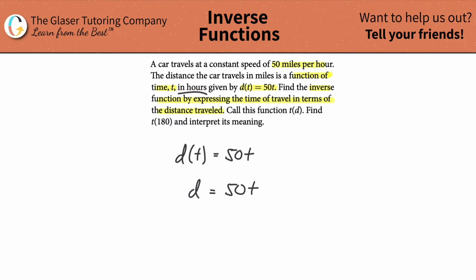It says T represents hours. Okay, so if one hour, if you're traveling 50 miles an hour, after one hour of travel how many miles you're going to travel? 50, right? After two hours, how many miles? 100, etc.